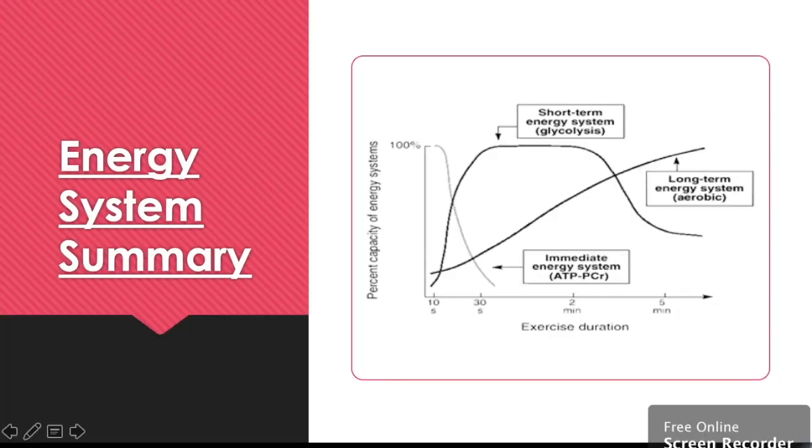Okay, to summarize how the energy systems work together, we have a little diagram here. On this axis, the one going up, that's our intensity, from zero to 100% effort. On this axis, we have our time, 10 seconds upwards. As we can see, our immediate energy system, our ATP-PC system, that is done after about 10 seconds.